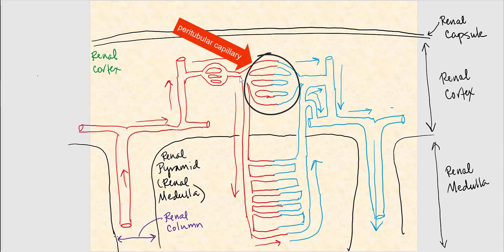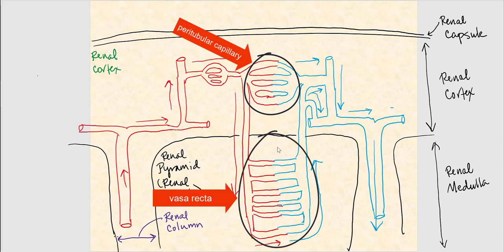Another possible pathway from the efferent arteriole is the vasa recta, a capillary bed found in the renal medulla. Note that blood does not necessarily have to drain into the vasa recta — you'll see why when we talk about the two different types of nephrons. So blood drains into the peritubular capillary and/or the vasa recta.